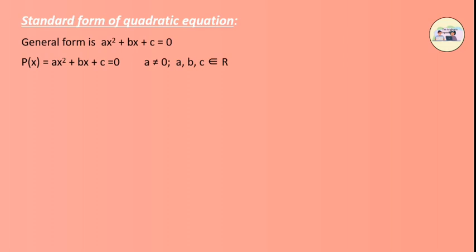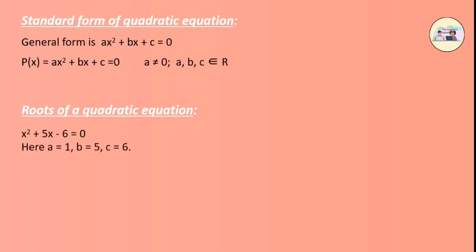Roots of a Quadratic Equation. Consider the equation x squared plus 5x minus 6. Here a equals 1, b equals 5, c equals 6. When we put x equals minus 6 in the above equation, we get the answer as 0. Therefore, minus 6 is called a root of the equation x squared plus 5x minus 6.